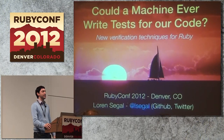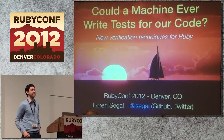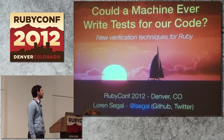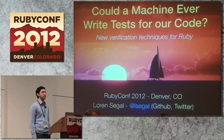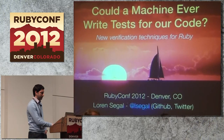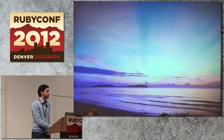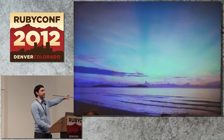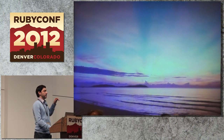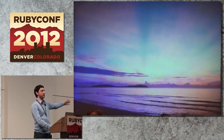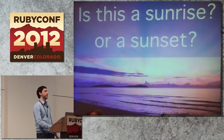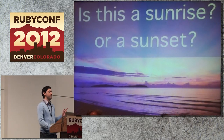I'm going to be talking about verification techniques in Ruby and asking the question: could a machine have a right test for our code? To start, I want to ask you guys a question. Looking at this picture, can you tell if this is a sunrise or a sunset? Think about that to yourself — we're going to come back to that later on.